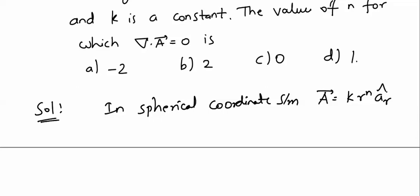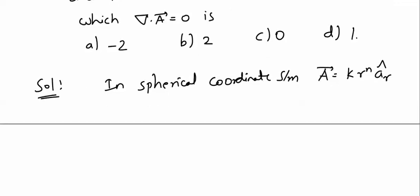Now, we need to find the value of n for which ∇·A = 0. I have given you the generalized formula. From the generalized formula, substituting the values of h1, h2, h3 and u, v, w, the formula for divergence in spherical coordinate system will appear. So ∇·A will be evaluated using the spherical divergence formula.